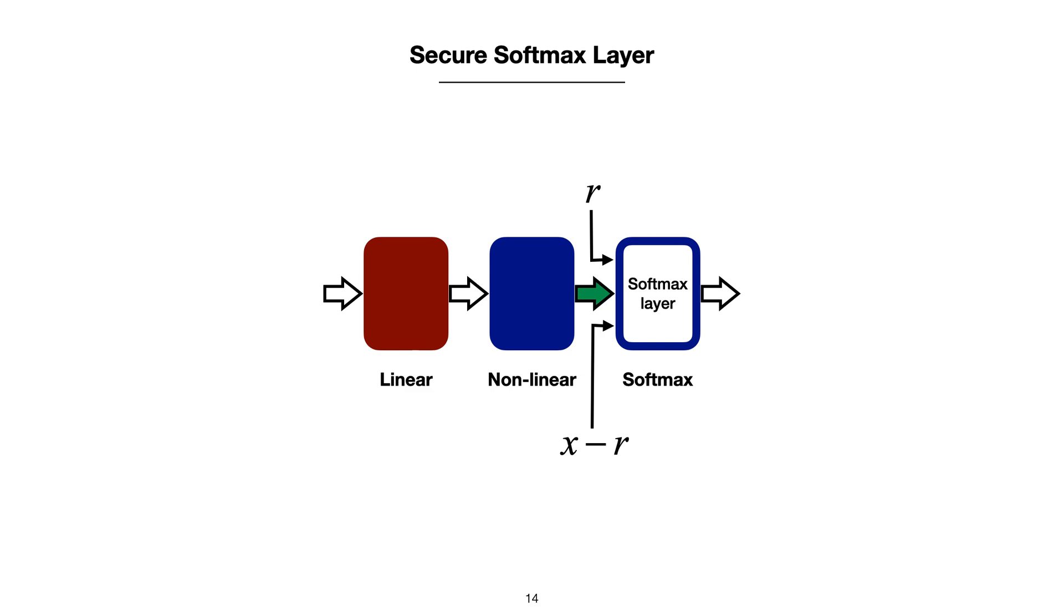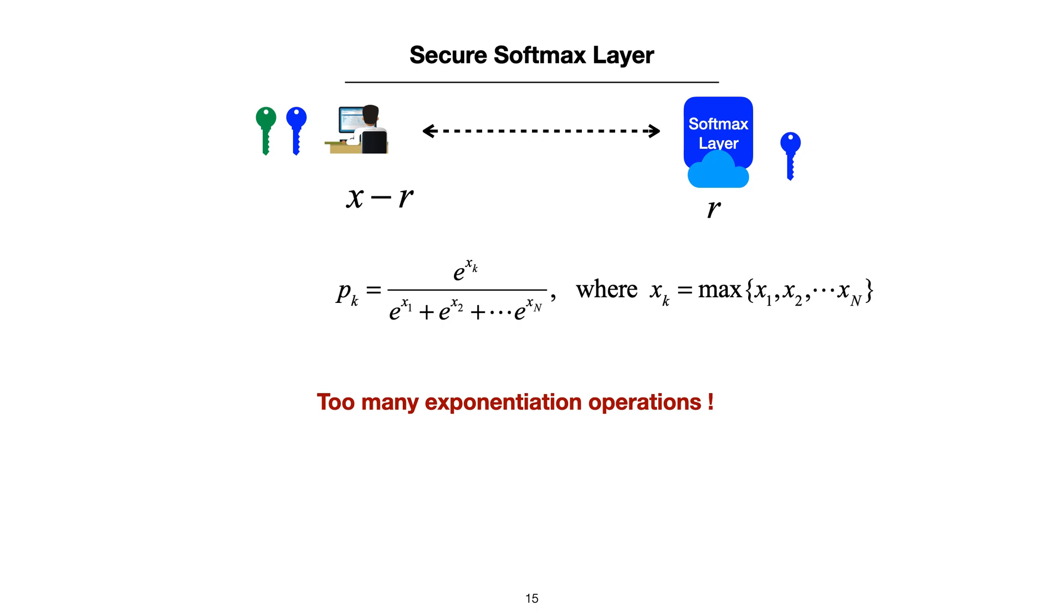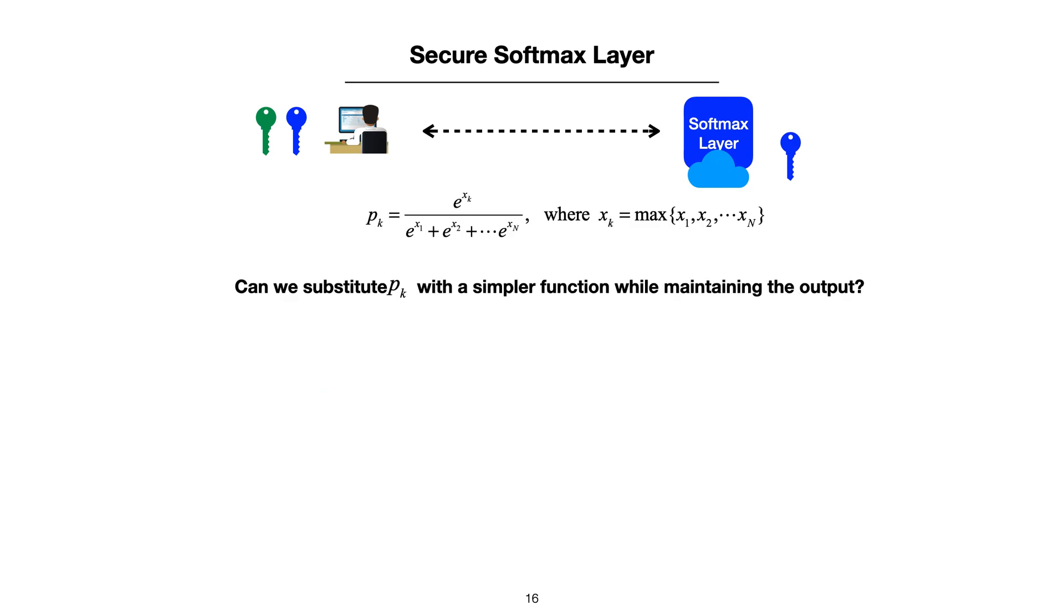The output of a nonlinear layer is also split into two parts, and they are inputs to the softmax layer. The main obstacle here is the high complexity of softmax operations due to many exponential operations. So our idea here is to replace the calculation with a simpler function.